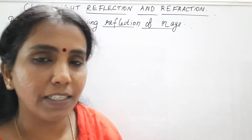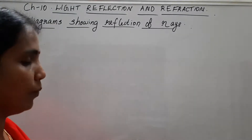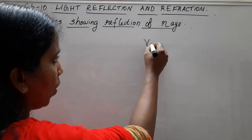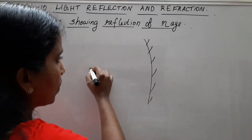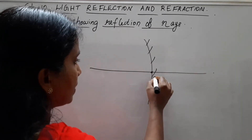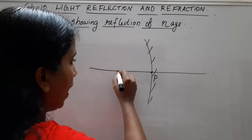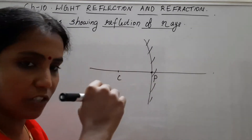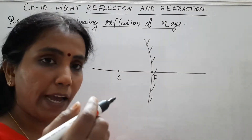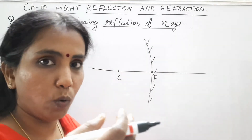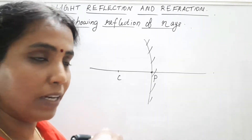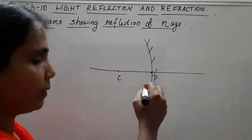Suppose we consider a concave mirror like this, and this is the principal axis. This point is the pole and this point is the center of curvature. Because when we draw ray diagrams, we have to apply laws of reflection, and in that case, we have to draw the normal.